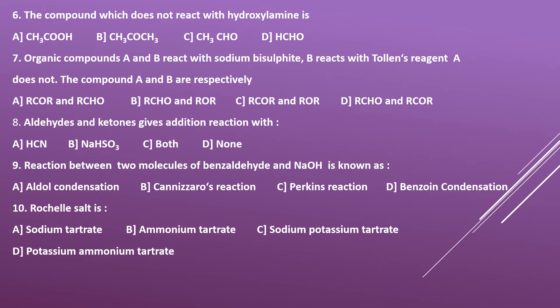Seventh question: organic compounds A and B both react with sodium bisulfite (NaHSO3). Among these, B reacts with Tollen's reagent but A does not. Options: A) RCOR and RCHO, B) RCHO and ROR, C) RCOR and ROR, D) RCHO and RCHO.